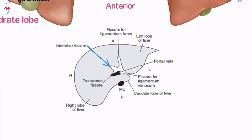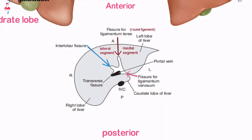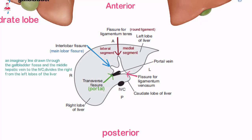Within the liver, there are several main grooves or fissures that are useful in defining the lobes and boundaries of the hepatic segments. The fissure for the round ligament divides the left hepatic lobe into medial and lateral segments. The fissure for the ligamentum venosum separates the caudate lobe from the left lobe. The transverse fissure contains the horizontal portions of the right and left portal veins. The interlobar fissure, or main lobar fissure, is an imaginary line drawn through the gallbladder fossa and the middle hepatic vein to the IVC, dividing the right from the left lobes of the liver.